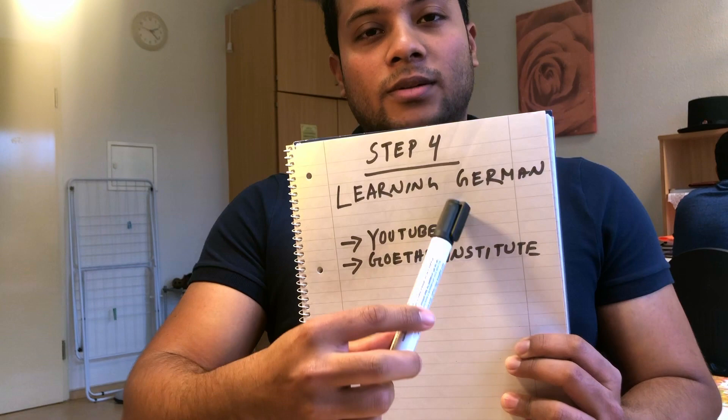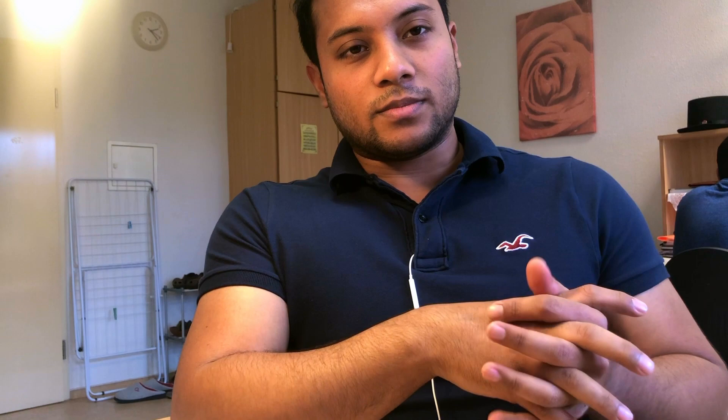Step number 4 is learning German, either on YouTube at A1 level. Step 4 is learning the German language. You can learn German language as well. You can see German people on YouTube — you can just search for this — and you can find German people on the internet. So there is step number 5.